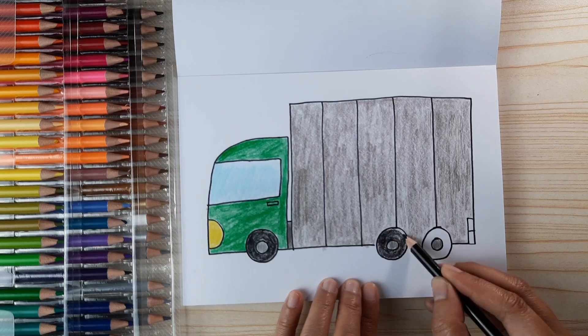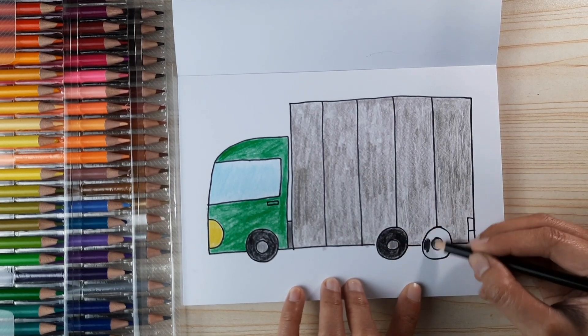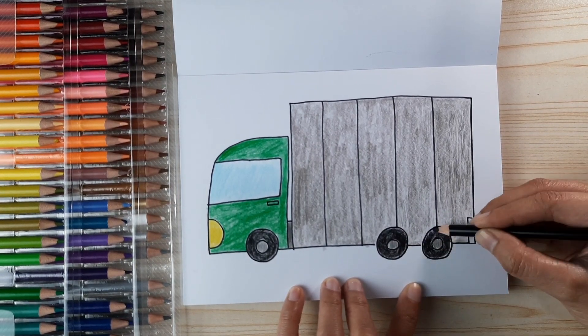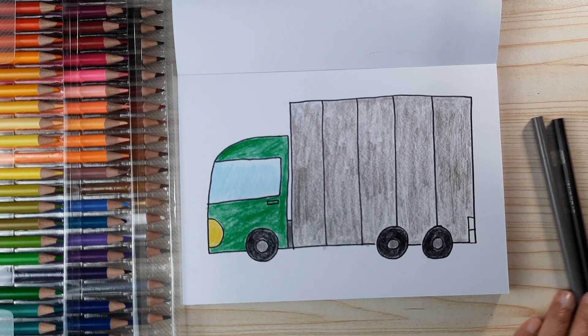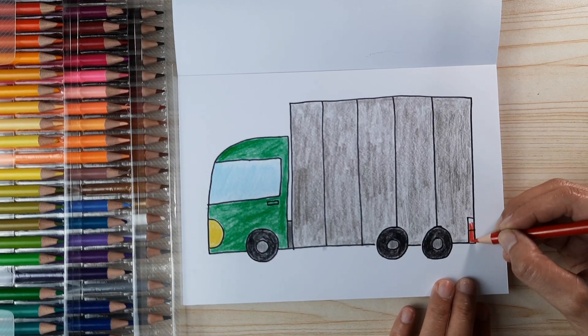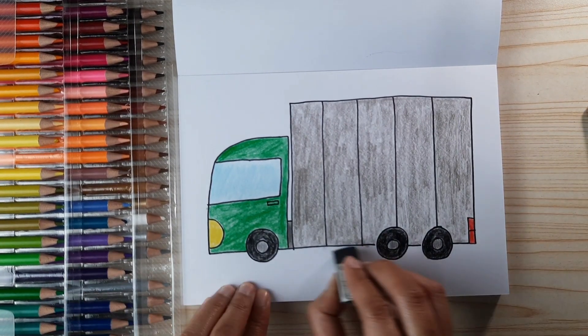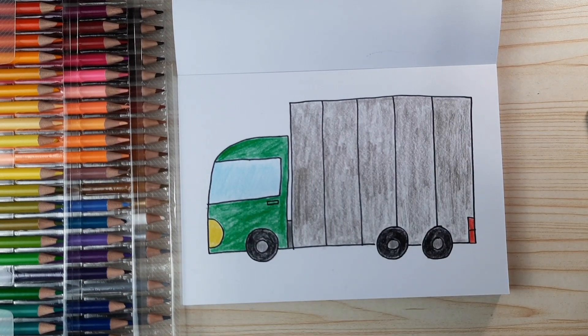You can color your container truck with any color you pick. Don't forget the backlight. You can use an eraser to make it more tidy and now it's done.